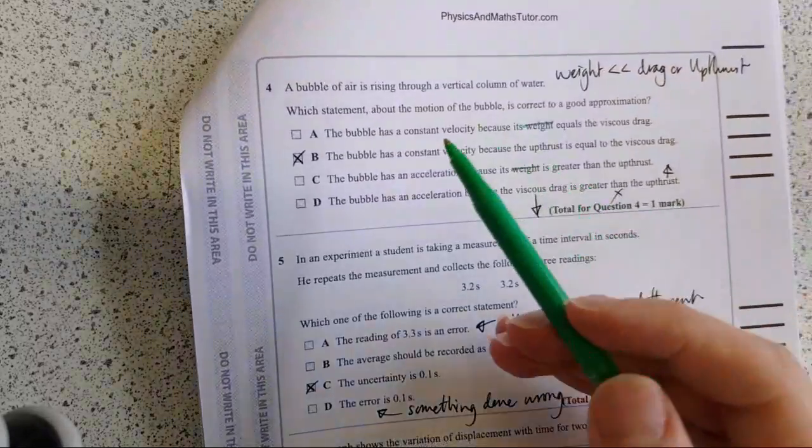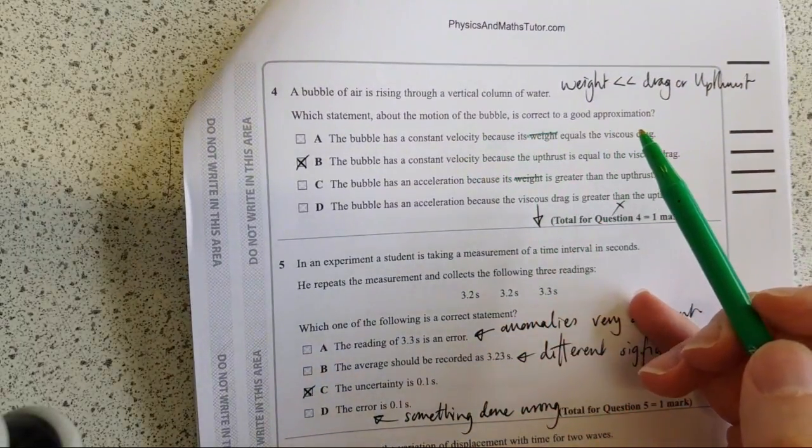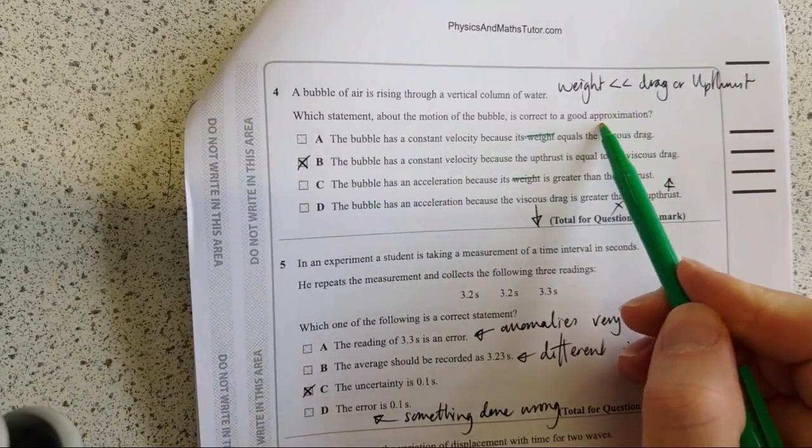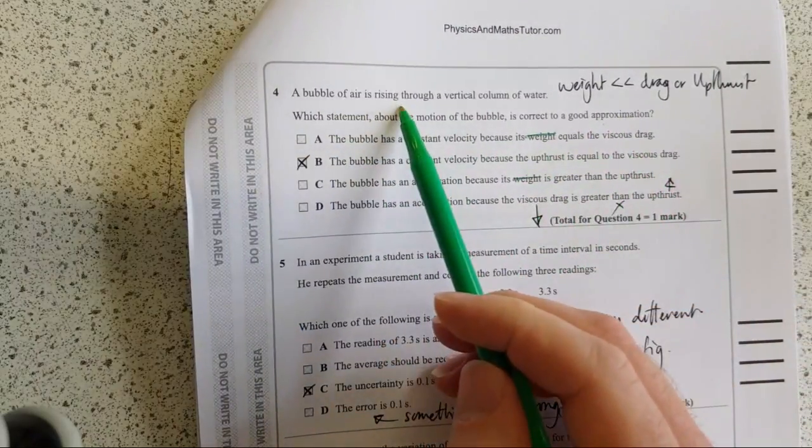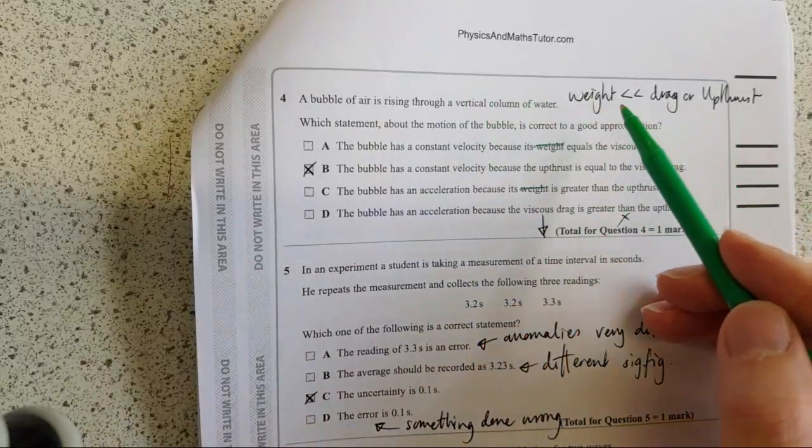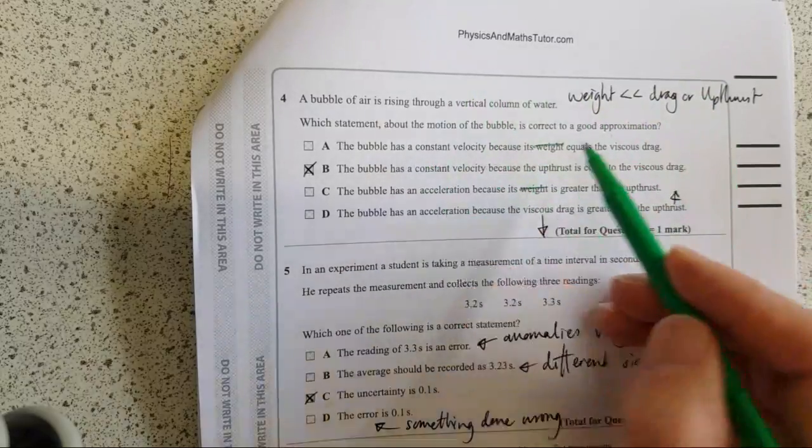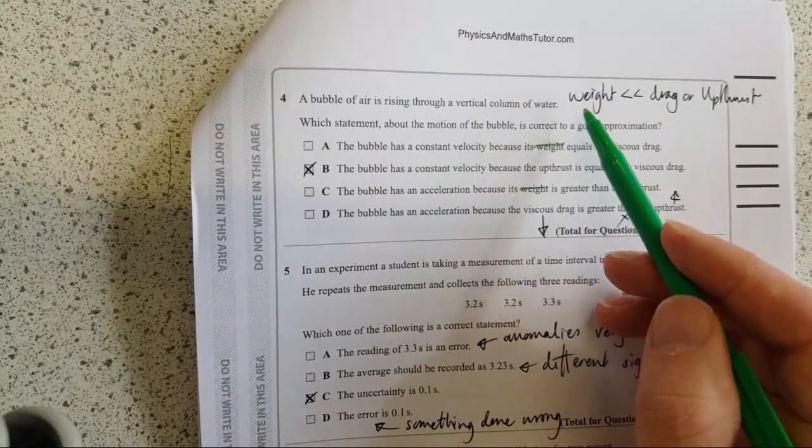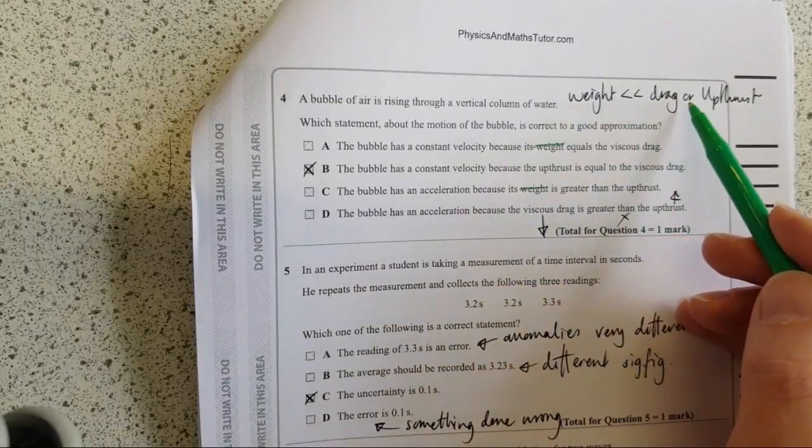Next one then. Which statement about the motion of a bubble is a good approximation? So approximation. Normally we talk about a bubble of air rising. We talk about the free forces. We talk about drag and up thrust and weight. But they only give you pairs of forces.